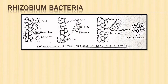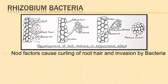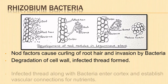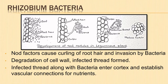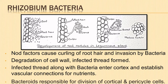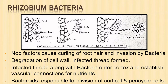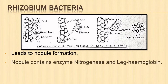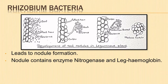Bacteria release nod factors that cause curling of root hairs, and the bacteria makes its way into the root hair. Degradation of the cell wall takes place and an infected thread is formed. The infected thread carries the bacteria into the cortex of the root, ramifies, and establishes a direct vascular connection with the host for exchange of nutrients. The bacteria get modified into rod-shaped bacteroids and are responsible for the division of inner cortical cells and pericycle cells. Division and growth of these cells leads to nodule formation.